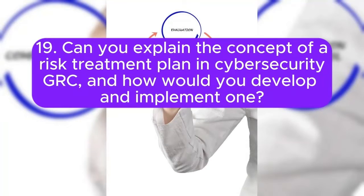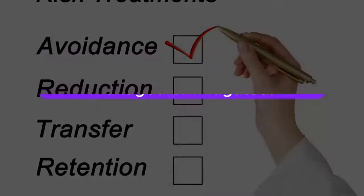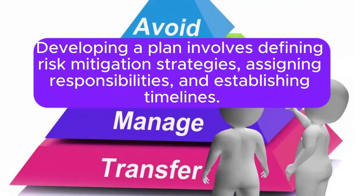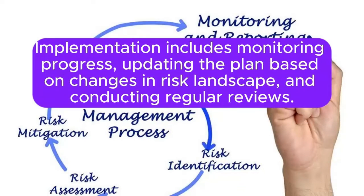Question 19: Can you explain the concept of a risk treatment plan in cybersecurity GRC, and how would you develop and implement one? Answer: A risk treatment plan outlines how identified risks will be managed or mitigated. Developing a plan involves defining risk mitigation strategies, assigning responsibilities, and establishing timelines. Implementation includes monitoring progress, updating the plan based on changes in the risk landscape, and conducting regular reviews.